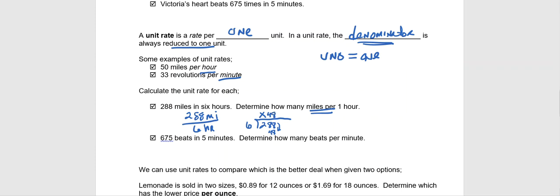So this rate, 288 miles per six hours, turns into a unit rate of 48 miles per one hour. And miles per hour, some unit rates can be abbreviated. We know miles per hour can be written as MPH, so we can just say 48 MPH.